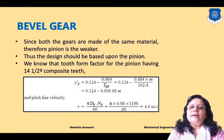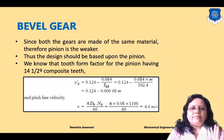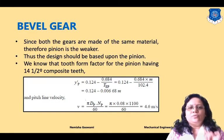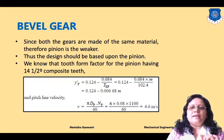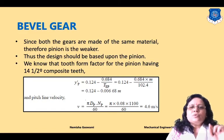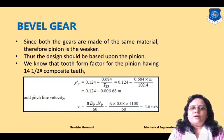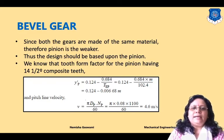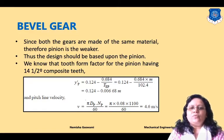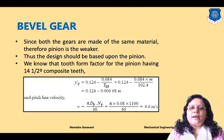Since both pinion and gear are made of the same material, the pinion will be weaker, so we design on the basis of the pinion. The pressure angle is 14.5° composite teeth, so the tooth form factor is: y'p = 0.124 − (0.1684/Tep) = 0.124 − 0.00668m.